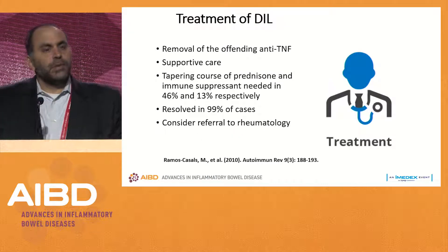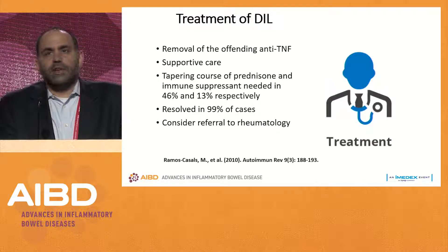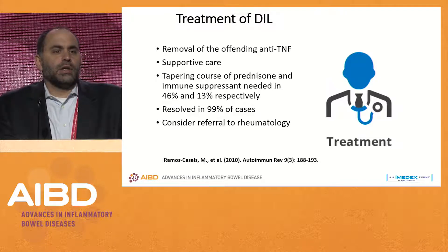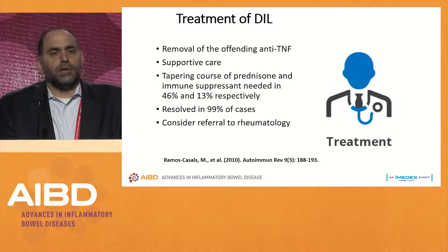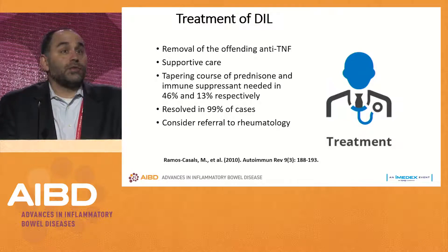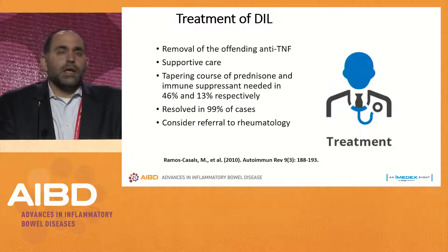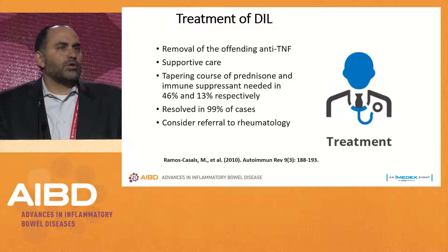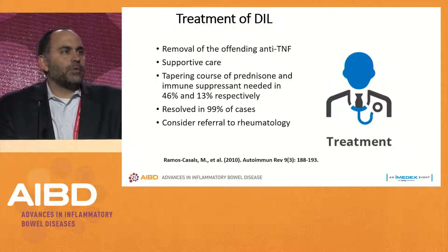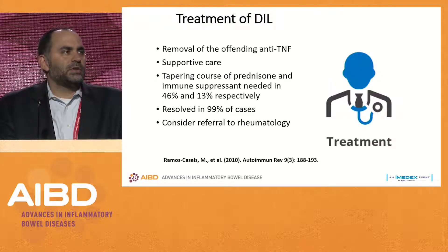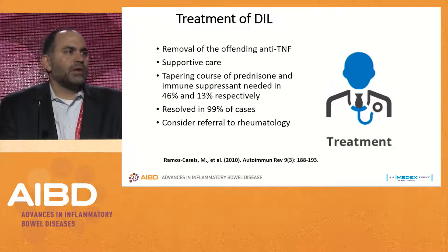To treat drug-induced lupus: first and foremost, remove the offending anti-TNF. Most patients will need a tapering course of prednisone, and a minority will need an immunosuppressant as well. Prognosis is quite good — resolution occurs in nearly 100% of cases. I refer to rheumatology when I'm not sure if it's type 2 arthritis or drug-induced lupus. If it's a clear drug-induced lupus, stop the drug, taper prednisone, and move on to another agent.